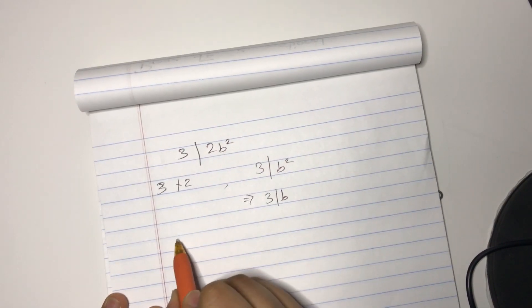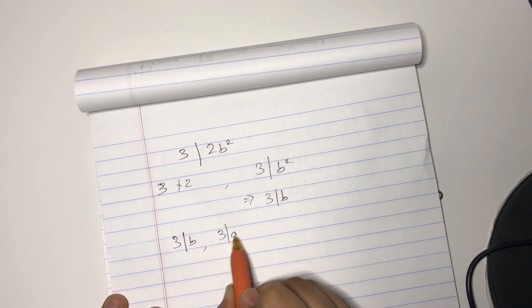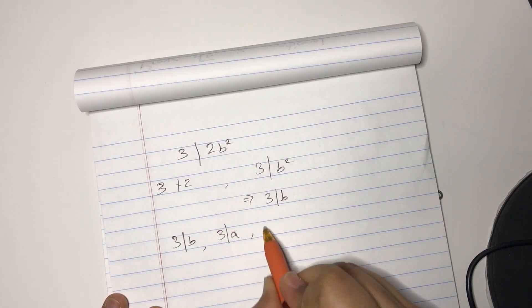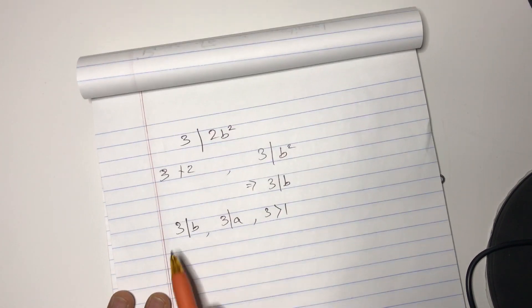So we have 3 divides B, 3 divides A from the previous page. And obviously, 3 is greater than 1. From these two, actually, we have the GCD of A and B has to be greater than or equal to 3.